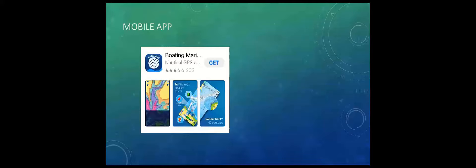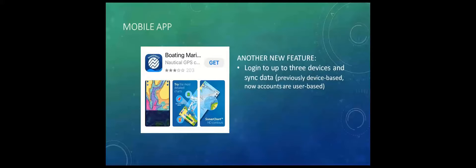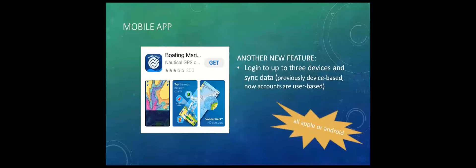Once you get the new app installed, you can choose the region you want to subscribe to, which makes it a lot more user friendly. Your account is now user-based, not device-based, so you can log into multiple mobile devices and have access to all of your routes, markers, and everything else. Before, if you had an iPhone and an iPad, you'd need to pay again for the second device. Now you just install it wherever you want and log in. One gotcha: all devices need to have the same operating system — either all Apple or all Android.